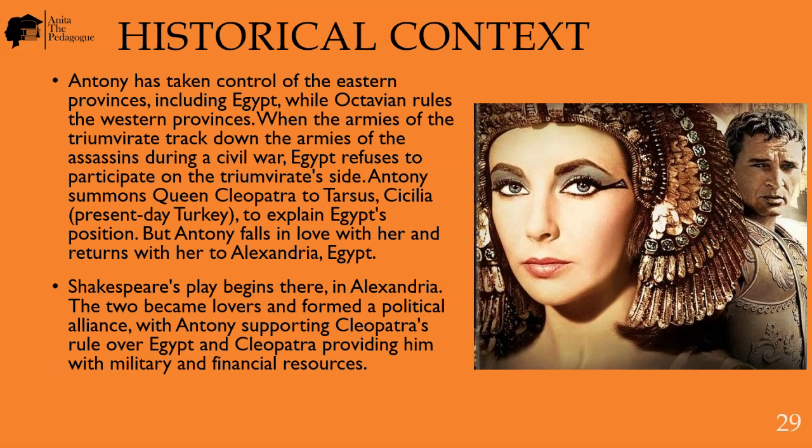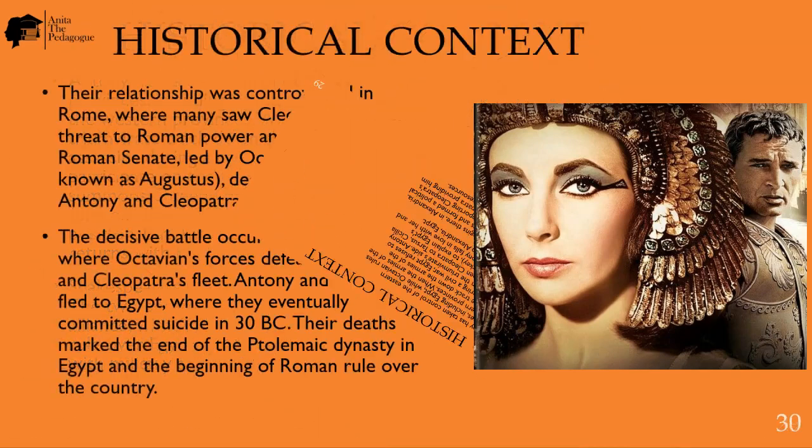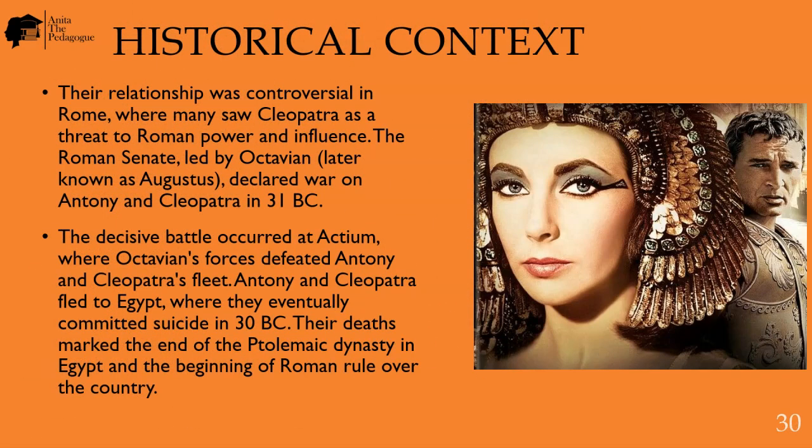Shakespeare's play begins there in Alexandria. The two become lovers and form a political alliance, with Antony supporting Cleopatra's rule over Egypt and Cleopatra providing him with military and financial resources. Their relationship was controversial in Rome, where many saw Cleopatra as a threat to Roman power and influence.